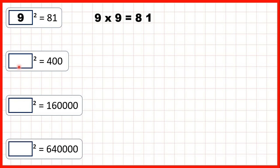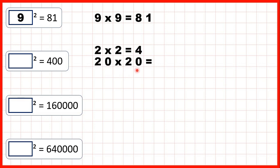But now, what squared equals 400? Well, we know that 2 times 2 is 4, so that must mean that 20 times 20 is 400, because remember, if we have two end zeros in the question, there will be two end zeros in the answer. So because 20 times 20 is 400, we know that 20 squared is 400.